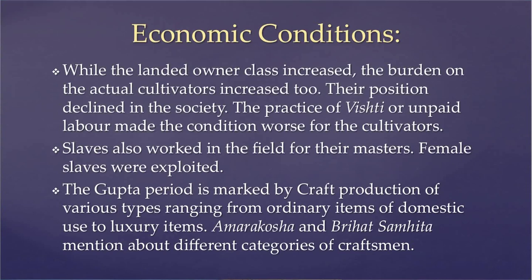As a result, the burden of the entire economy fell on the actual tillers or cultivators, whose position declined in society. The practice of vishti, or unpaid labor, made their conditions even worse. Slaves were also used to work in the fields, and female slaves were exploited in the Gupta period. The Gupta period is marked by craft production of various types, ranging from ordinary household items to luxury items. Amarakosha and Brihat Samhita mention different categories of craftsmen, and some Shrenis or guilds were constituted by artisans and craftsmen.